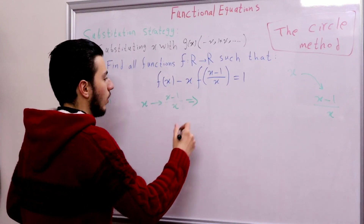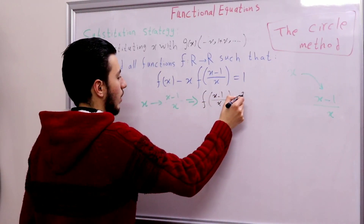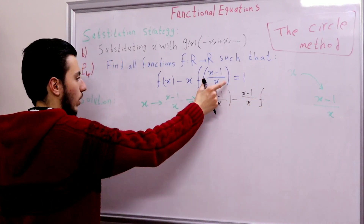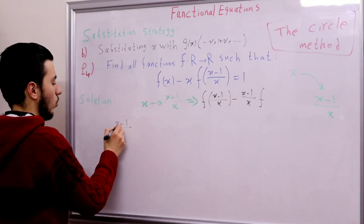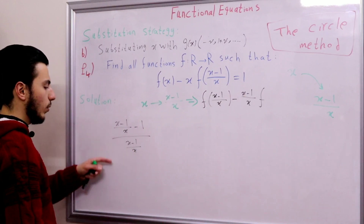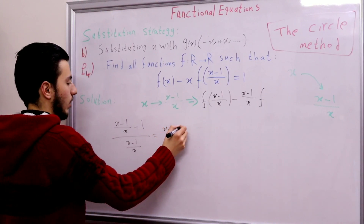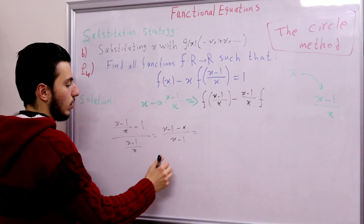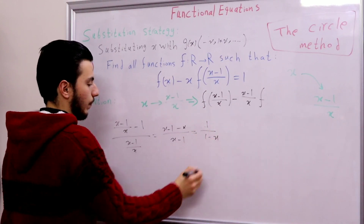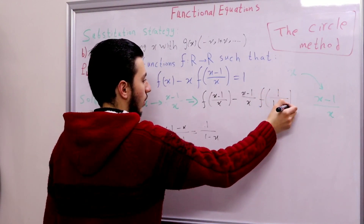After the first substitution we have f(x minus 1 over x) minus (x minus 1 over x) times f of (x minus 1 over x minus 1 over x). Evaluating that inner expression and multiplying everything by x gives x minus 1 minus x over x minus 1, which equals 1 over 1 minus x. So now we have f(1 over 1 minus x) and that equals 1.